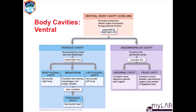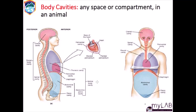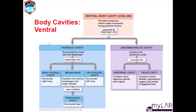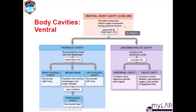We will look at these cavities in terms of two groups: the ventral body cavity and the dorsal body cavity. Starting with the ventral body cavity, which is also called the coelom — and in human anatomy there are many terminologies that describe the same thing, so it is important to be keen even when reading. The ventral body cavity provides protection and allows organ movement, lining to prevent friction. It is separated into two parts by the diaphragm, which separates the thoracic cavity from the abdominopelvic cavity.